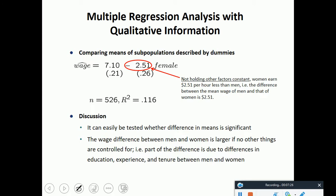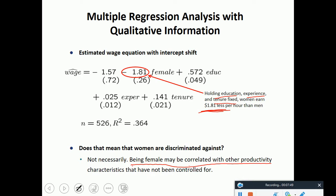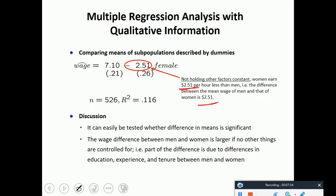Comparing means of subpopulations described by the dummies. If we don't hold the other factors constant, we would see that women have $2.51 per hour less than men. So the difference between the mean wage of men and women is $2.51. If we control for the other factors, it's minus 1.81. But when we don't control for the other factors, it becomes negative 2.51. In fact, it increases.